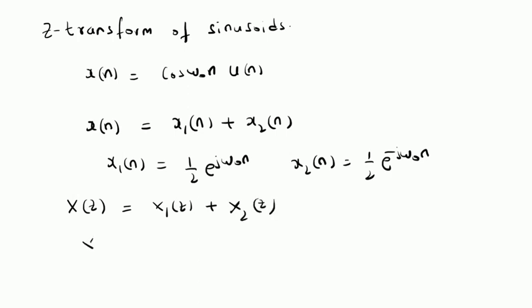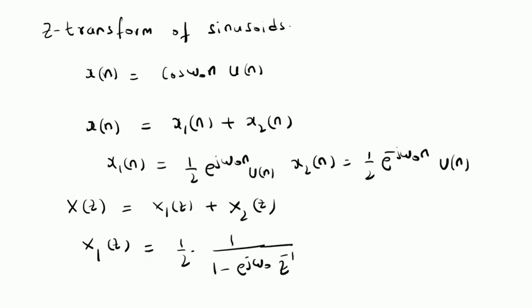X1(z) is the Z-transform of X1(n), which equals 1/2 times 1/(1 - e^(j omega naught) z^(-1)). Here, X1(n) is like a constant multiplied by alpha^n u(n), where alpha is e^(j omega naught). The ROC is given by |z| > 1, because the absolute value of e^(j omega naught) is 1.